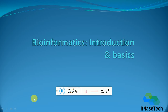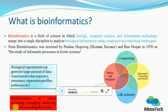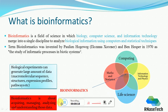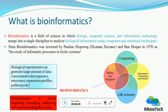Hello students. Today's video will be about bioinformatics: introductions and basics. So what is bioinformatics? As you can see from this Venn diagram, bioinformatics lies in the middle of all these circles. One circle is for computing, one is for math and statistics, one is for information technology and physics, and one is for life sciences. Basically, bioinformatics is a marriage between biology, computer science, and information technology.